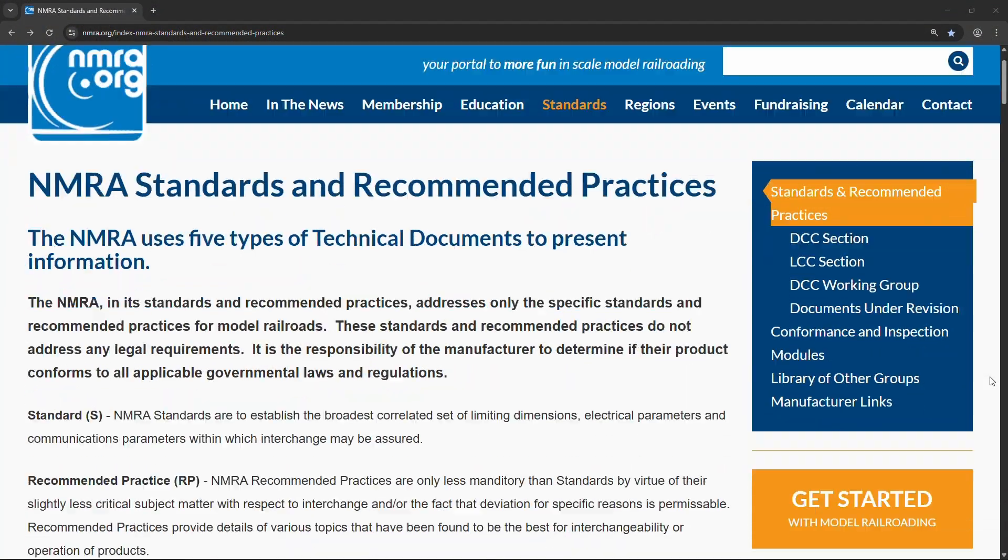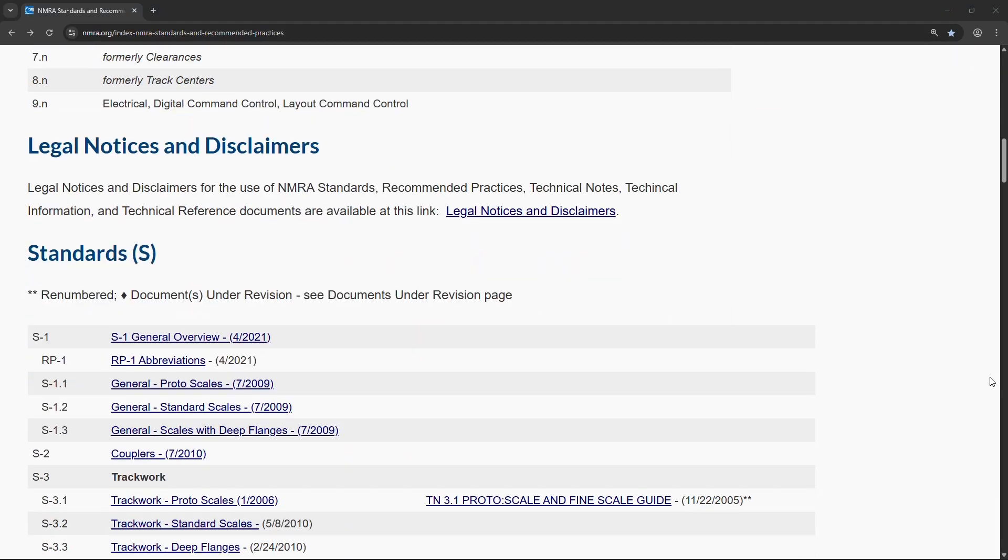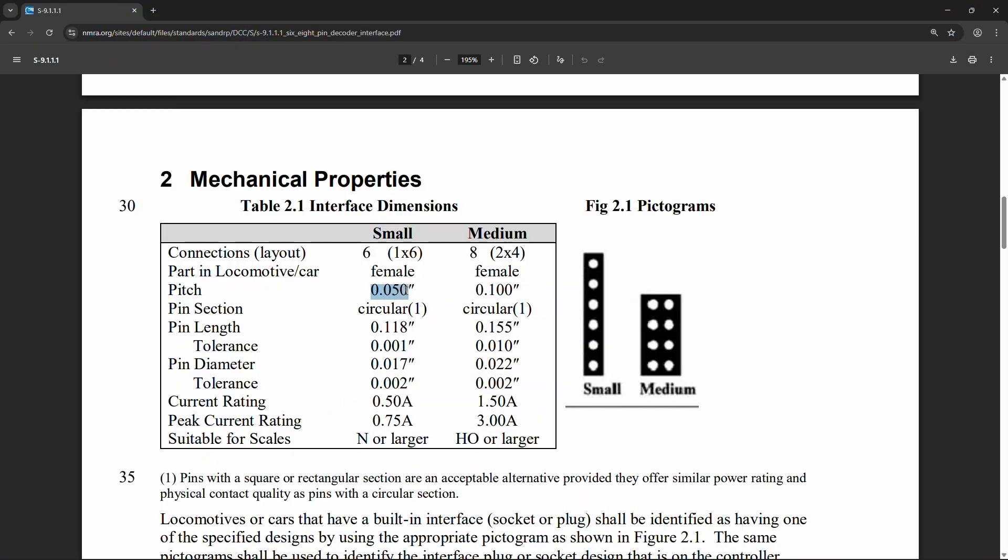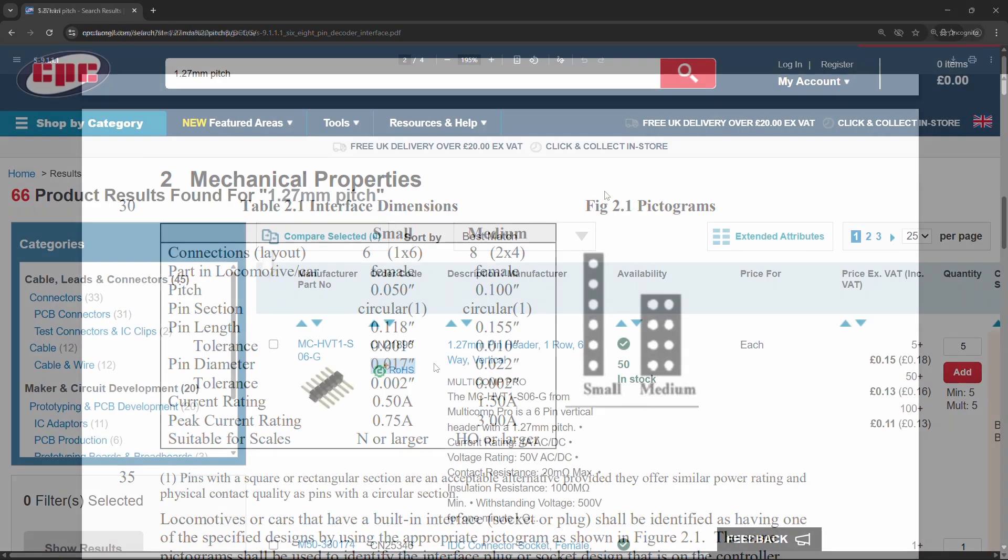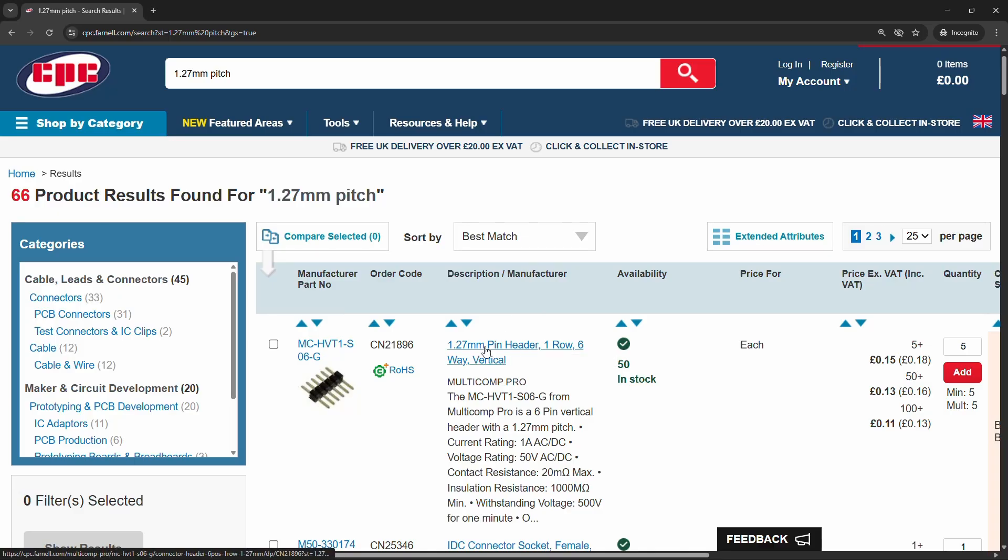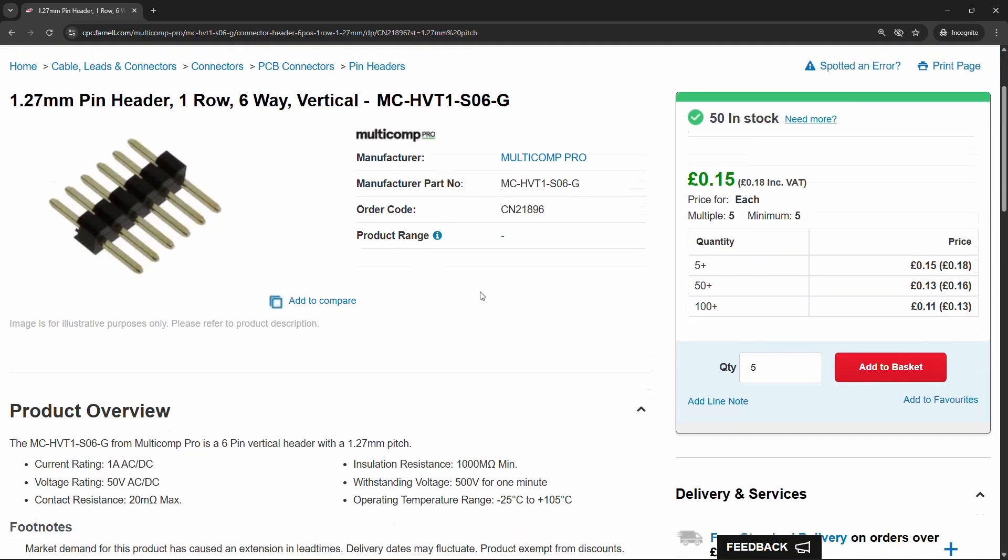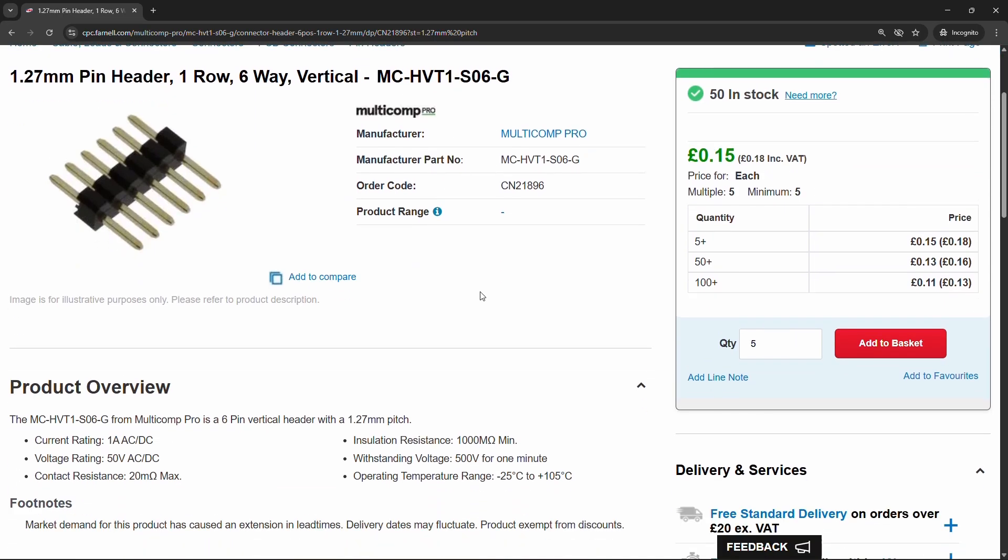The NMRA have specifications for physical decoder interfaces. For the 6-pin socket, the pins have to have a gap of 1.27mm between them, and the pins themselves need to have a diameter of 0.2mm. I found it difficult to find anything with both of these dimensions, whether I searched in imperial or metric, so eventually just plumped for something that said it was 1.27mm pitch. Looking at a close-up product image, I could compare the gap between the pins to their width, and the proportions looked right.